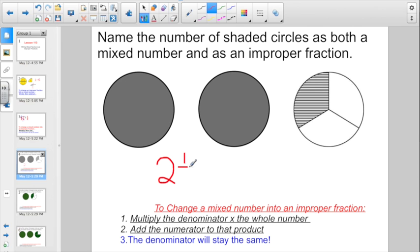So there is my mixed number, but they also want it written as an improper fraction. So multiply the denominator times the whole number. 3 times 2 is going to give us 6. Then go and add the denominator. 6 plus 1 more. Hey, that equals 7.